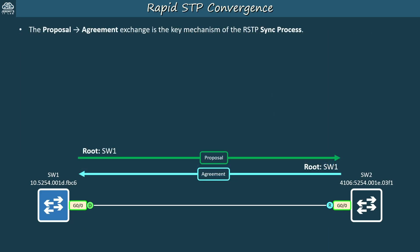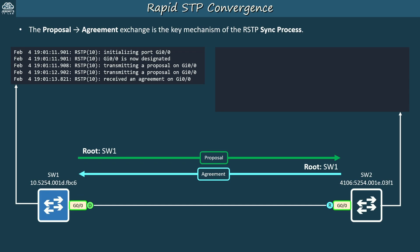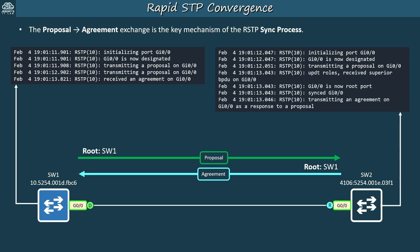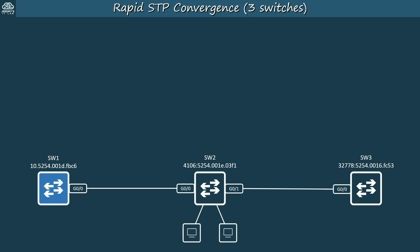The proposal-agreement exchange is the key mechanism of the RSTP sync process. Looking at debug output on SW1, we can see that G0/0 is initialized and becomes a designated port, transmits a few proposals, and then receives an agreement. On SW2, G0/0 is also initialized and made a designated port, then transmits a proposal. Soon after, it receives a superior BPDU from SW1, G0/0 becomes its root port, SW2 G0/0 is synced, and it transmits an agreement BPDU to SW1. That was a simple two-switch example connected by a single link.